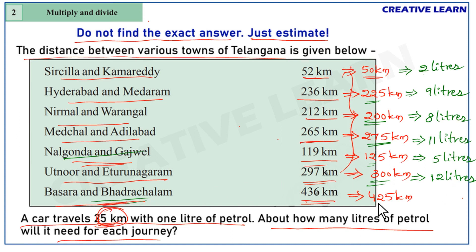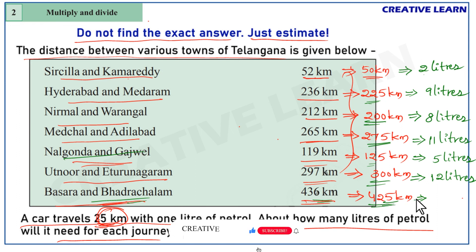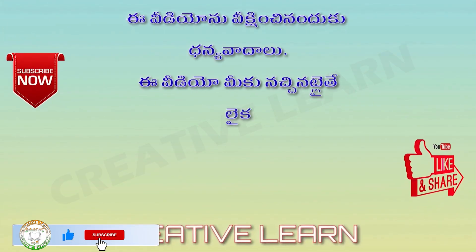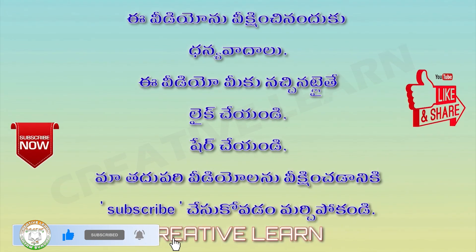Finally, Basara to Bhadrachalam: 436 kilometers is nearer to 425 kilometers. For 400 kilometers we need 16 liters, and the extra 25 kilometers needs 1 more liter, so 16 plus 1 equals 17 liters of petrol. All these values are approximate, not exact, because the question itself said just estimate — no need of exact answers. That is why we solved it this way.